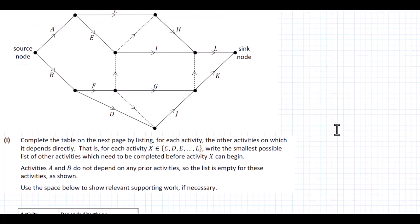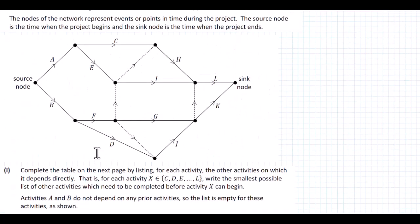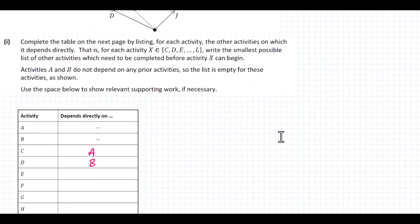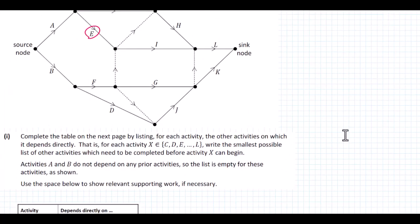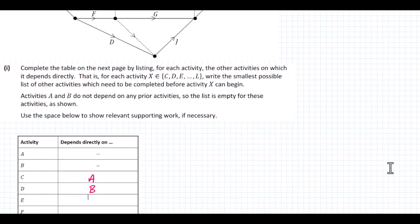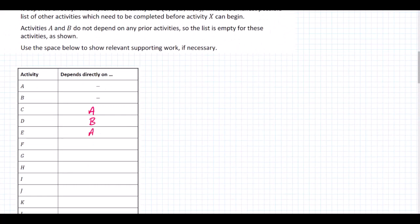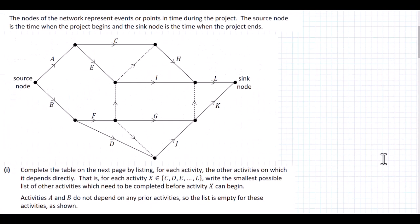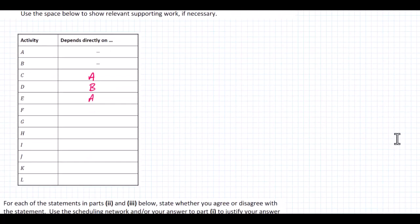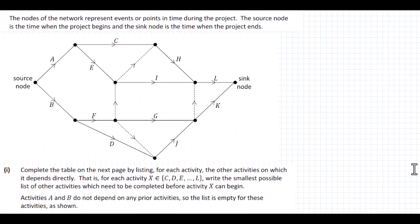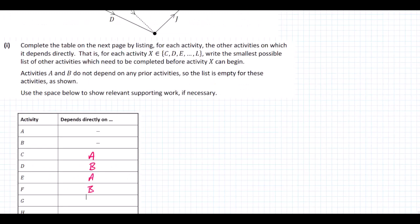So we write in A for C. D depends directly on B. E is here and depends directly on A, nothing else. F depends on just B — it just depends on B being completed. G depends on F being completed only, so we put F there.